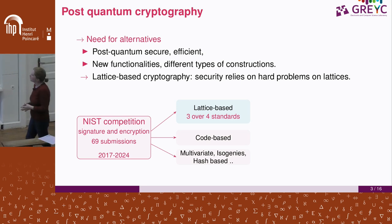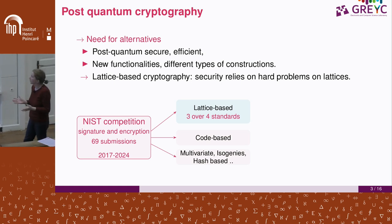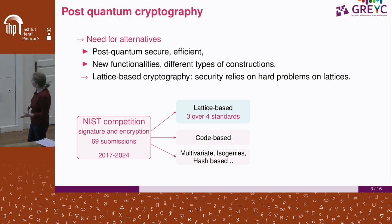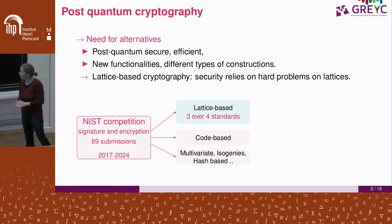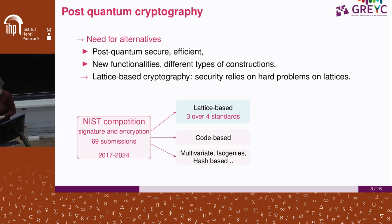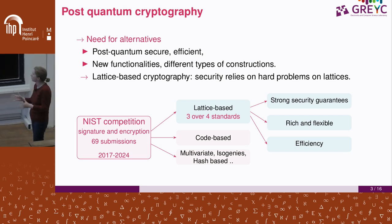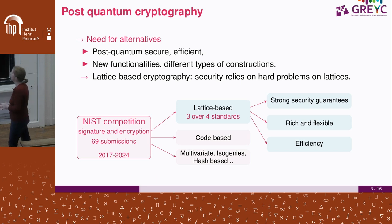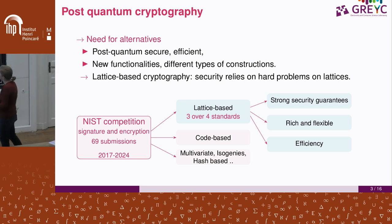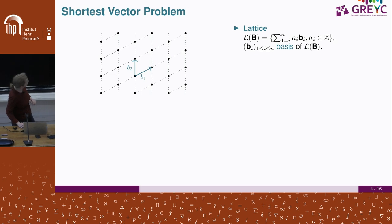This competition was for signature and encryption schemes. It started a few years ago with many submissions studied for seven years by cryptography researchers. Some were lattice-based, some code-based, some used isogenies, multivariate systems, or hash-based cryptography. At the first step of standardization this year or last year, there were four standards. Three of those four were lattice-based, because they work well: strong security guarantees, efficiency, and everything you need for cryptography. So now let's see how it works.